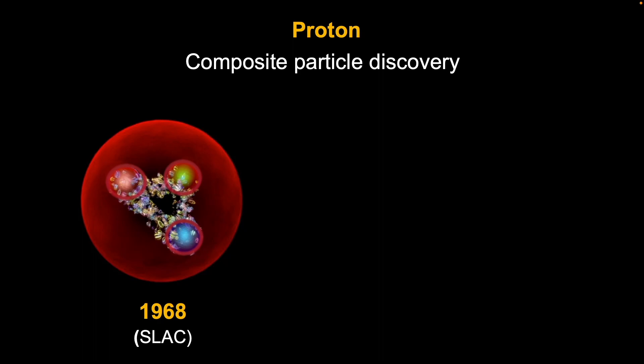What Bohr didn't know at the time is that the proton is a composite particle. It's made of other particles. This was confirmed in 1968, a half century after Bohr's model was first introduced. Since then, the proton is believed to consist of three quarks.